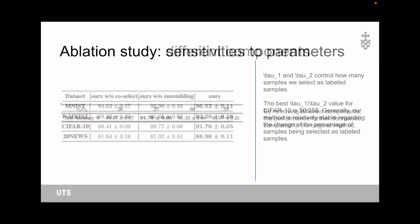We also study the percentage of confident samples we select from the unlabeled set. TAU1 and TAU2 control how many samples we select as labeled samples. The larger TAU1 divided by TAU2 is, the more samples are included in the labeled set. As we can see from the table, the best TAU1 divided by TAU2 value for CIFAR-10 is 0.25. Generally, our method is relatively stable regarding the change of the percentage of samples being selected as labeled samples.